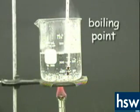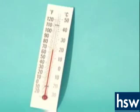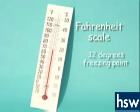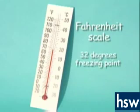The scale is then divided into 100 equal degree markings. In America, the Fahrenheit scale is used in daily life. This scale uses 32 degrees as the freezing point of water and